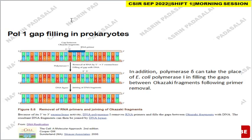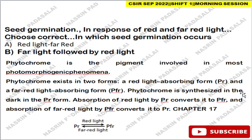The next question is about gap filling in prokaryotes. The enzyme responsible for gap filling is DNA polymerase I, which has 5' to 3' exonuclease activity, allowing it to remove the RNA primer and fill the gap between Okazaki fragments with DNA. In eukaryotes, DNA polymerase delta takes the place of E. coli polymerase I in filling the gap.